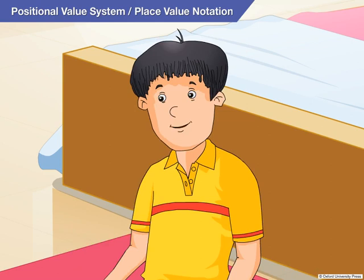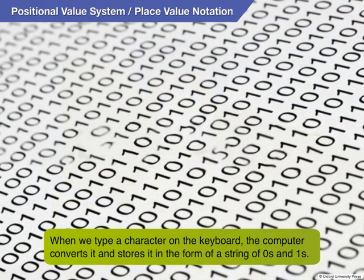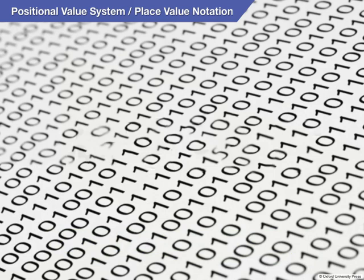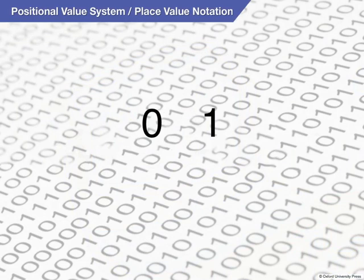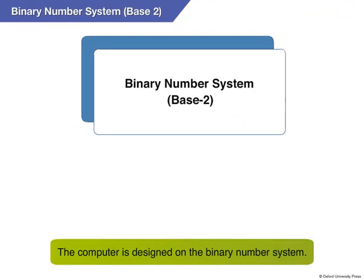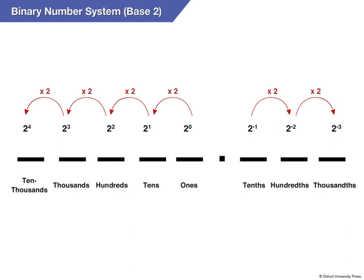I have a question, Goggle. Computers perform many calculations for us. I know that when we type a character on the keyboard, the computer converts it and stores it in the form of a string of zeros and ones — it doesn't use any other digits. So I was wondering, how does the number system work in computers? That's a brilliant question. The digits 0 and 1 are together called the binary digits or bits. 0 and 1 form the binary number system. The computer is designed on this system. The binary number system is also a positional numbering system wherein each binary digit is expressed as a power of 2.